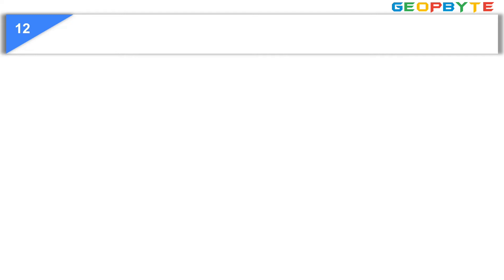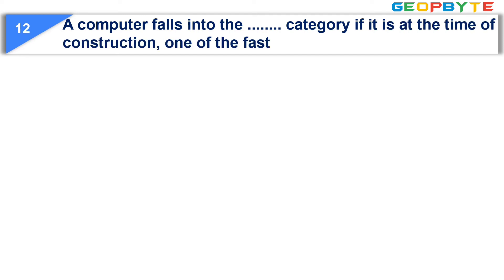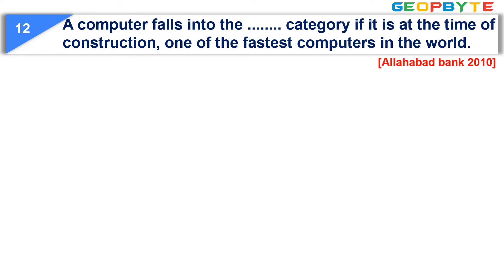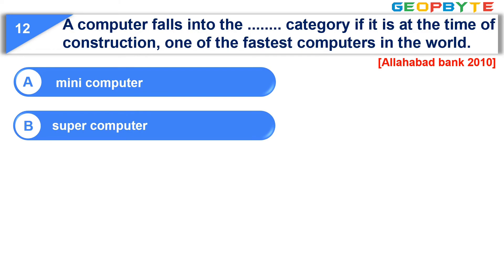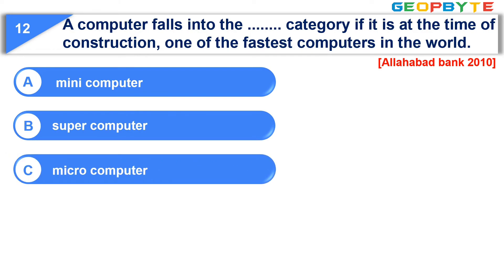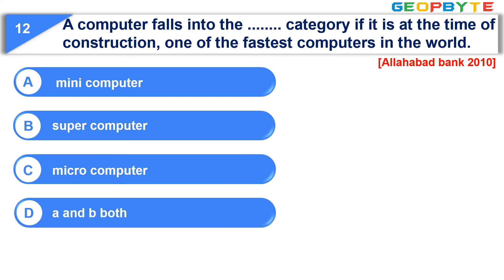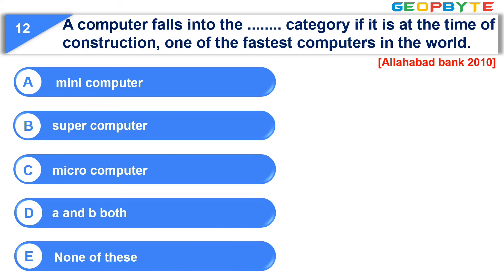Moving to question number twelve. A computer falls into this category if it is, at the time of construction, one of the fastest computers in the world. Option A: Mini computer. Option B: Super computer. Option C: Micro computer. Option D: A and B both. Option E: None of these. The correct answer is option B, Super computer.